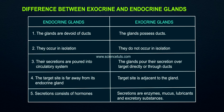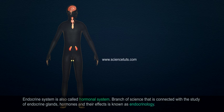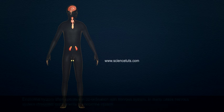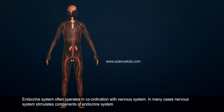Point 6: Secretions of endocrine glands consist of hormones, whereas secretions of exocrine glands are enzymes, mucus, lubricants, and excretory substances. The endocrine system is also called the hormonal system. The branch of science connected with the study of endocrine glands, hormones, and their effects is known as endocrinology.